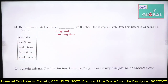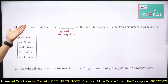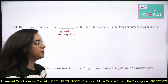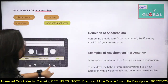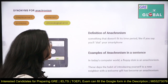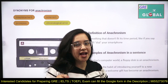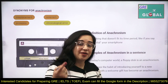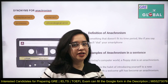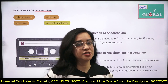To explain: the director inserted deliberate things not matching the time period — us time ko match nahi kar rahe. The director inserted things into the wrong time period. Anachronism is misplacement — a chronological error, something that does not fit its time period. For example, 'you will dial your smartphone' — you don't dial a smartphone. Or saying 'bring a floppy disk' today when floppy disks are no longer common.